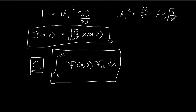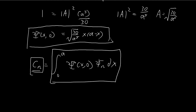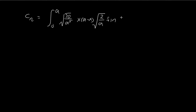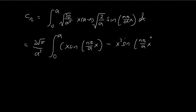Let's focus on this integral for c_n. We substitute the initial wave function — which contains x(a minus x) — and multiply by xi_n, which is sqrt(2/a) times sine(n pi x / a), then integrate from 0 to a. Pulling the constants out, we get sqrt(60/a⁶) = sqrt(2) times sqrt(30)/a³. Inside the integral, we have two terms: ax·sine(n pi x/a) minus x²·sine(n pi x/a) dx. It now essentially becomes a math problem with two components.